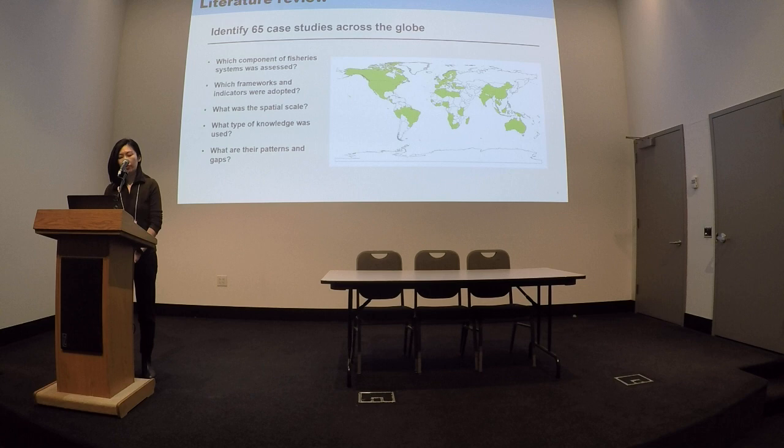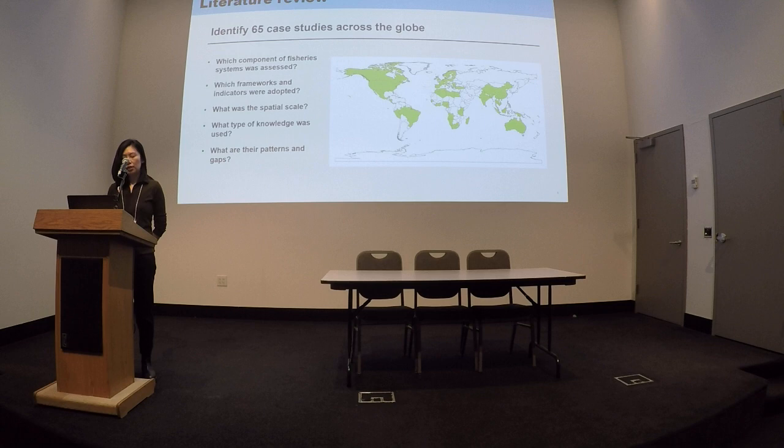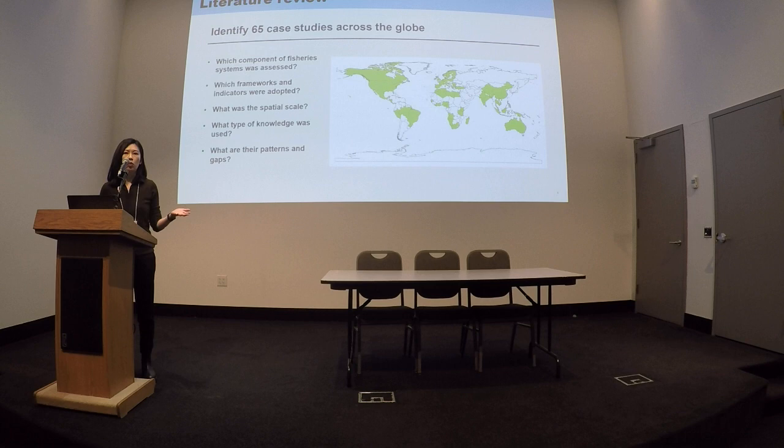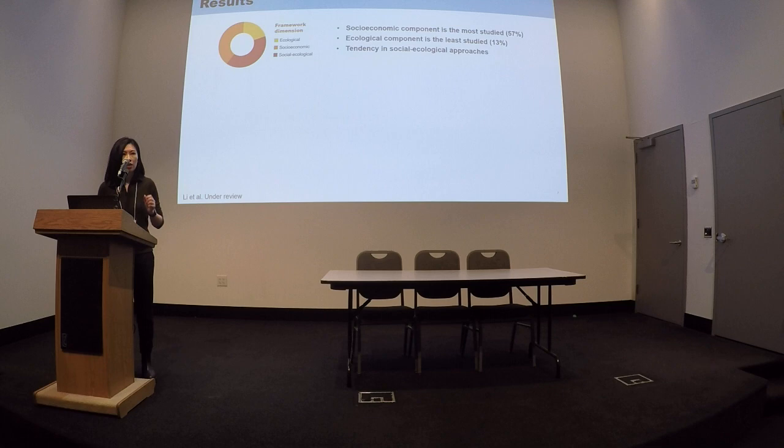We did a literature review of this topic and identified 65 case studies across the globe. We basically analyzed information about which component of the fisheries system was assessed, what frameworks and indicators were used by these countries, and what was the spatial scale and type of knowledge used — and then we looked at the patterns and gaps across all these components.